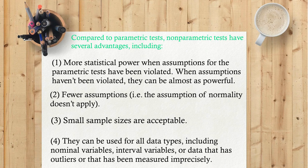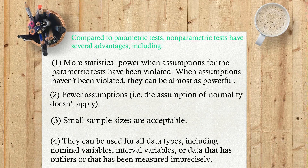2. Fewer assumptions — that means the assumption of normality doesn't apply. 3. Small sample sizes are acceptable. 4. They can be used for all data types, including nominal variables, interval variables, or data that has outliers or that has been measured imprecisely.